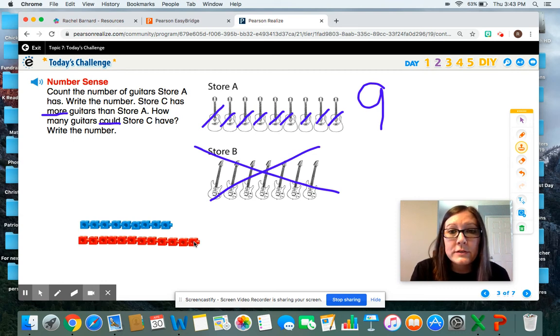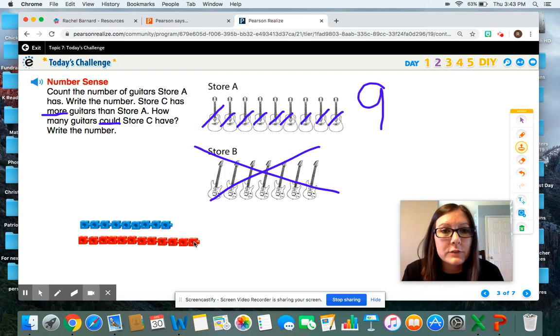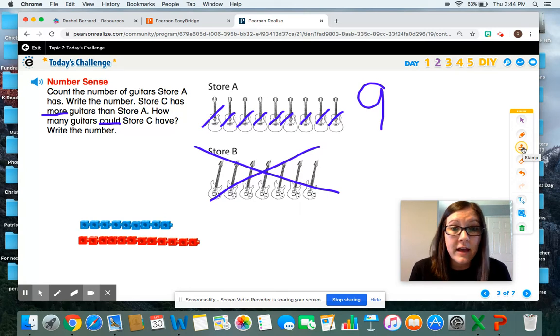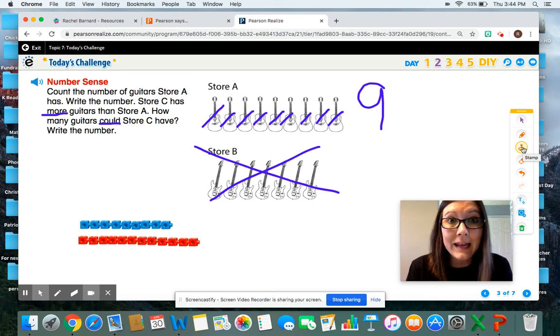Any number that is greater than nine could be the amount of guitars that store C has, as long as the number is greater than nine. It could go on forever. They could have a lot of guitars. They could have 10 or even more: 11, 12, 13, 14, 15, 99. All of those numbers are greater than nine.